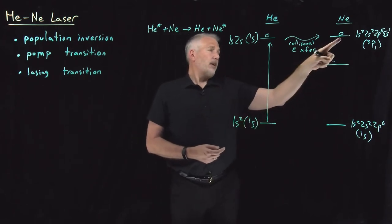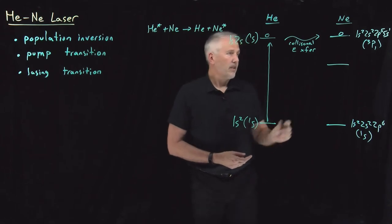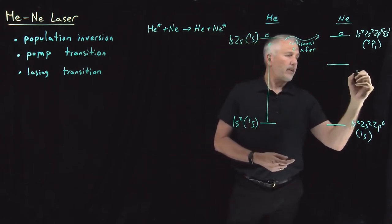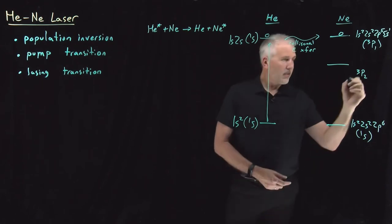That is now the state that's maintained in a population inversion relative to some lower states in that same atom. So the excited triplet P state of the neon, that's a little bit above another triplet P, triplet P2 state of neon.